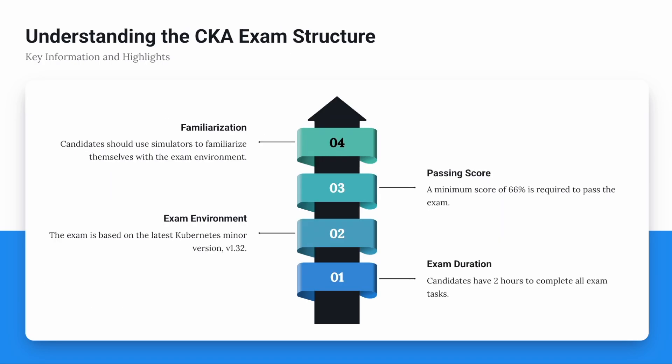Starting in 2025, there were significant changes, and from February 18th, all these changes have been added. The minimum passing score is 66% and you have to complete the exam within 2 hours. Moreover, the killer.sh simulator for hands-on real-time practice is running on Kubernetes version 1.32.